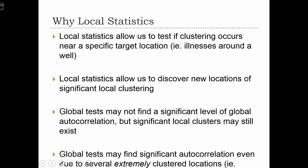Another reason for needing local statistics is that global tests may not find a significant level of global autocorrelation, even if significant local clusters exist in the map. Also, global tests might find significant levels of autocorrelation, even if most of the locations on the map don't exhibit any pattern of clustering.